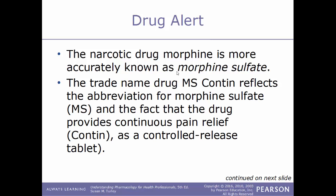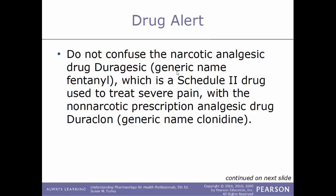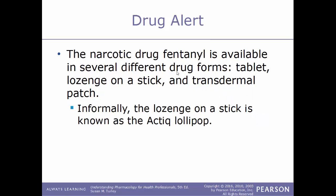A drug alert: the narcotic drug morphine is more accurately known as morphine sulfate. The trade name drug MS Contin reflects the abbreviation for morphine sulfate — that's where the 'MS' comes from — and the fact that the drug provides continuous pain relief. It is dosed as a controlled-release tablet. Be careful not to confuse the narcotic analgesic drug Duragesic, a Schedule 2 drug given to treat severe pain, with the non-narcotic prescription analgesic drug Duraclon — the names are similar but they are very different in strength and potential for addiction. The narcotic drug fentanyl is available in several different drug forms: a tablet, a transdermal patch, or even a lozenge on a stick informally called the Actiq lollipop.